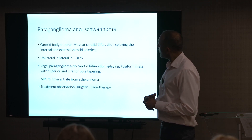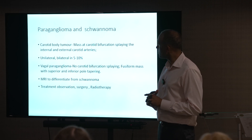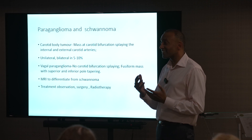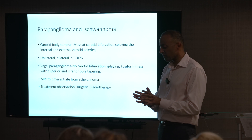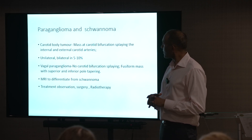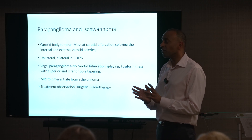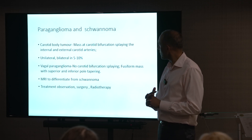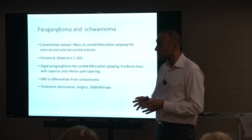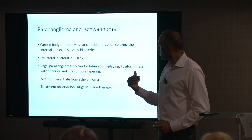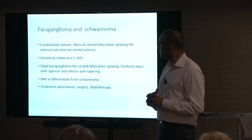Other lateral neck lumps that you might see, less common but not lymph nodes, include carotid body tumours — these are paragangliomas and can easily be mistaken clinically for lymph nodes. On ultrasound examination, you'll see a mass that bifurcates at the carotid bifurcation, splaying the internal and external carotids. Vagal paragangliomas are less common, but you'll be able to tell from the way the arteries are splayed — there's usually no splaying in a vagal paraganglioma. We usually get MRI scans as well, as they help differentiate paragangliomas from schwannomas. With FNA for these, you need to be wary in terms of bleeding, so you can often make a diagnosis with ultrasound and MRI alone.